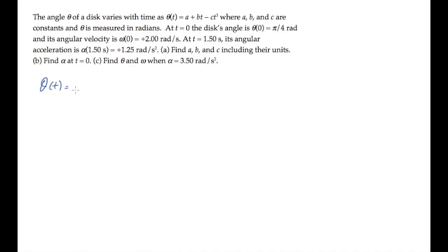This problem gives us a disk's angular position, along with three values: its angular position and angular velocity at time equals zero, and its angular acceleration at one and a half seconds. It asks us in part a to find a, b, and c.